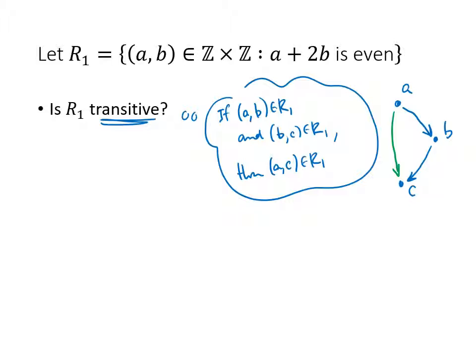We can try to investigate this. What we want to find are values of a, b, and c where (a, b) is in my relation, and (b, c) is in my relation, and then try to figure out whether (a, c) is in my relation. I have to think of two numbers where a + 2b is even. Maybe (4, 3), but I'm going to have a hard time pairing 3 up with anything, so let's discard that and try again.